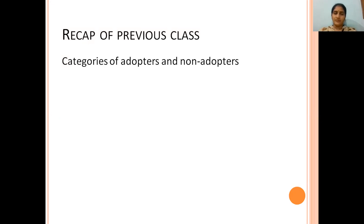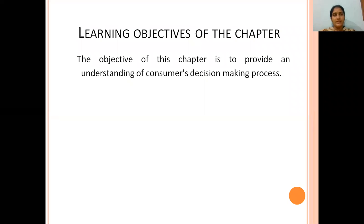Before starting today's topic, let us first recap what we discussed in our previous class. We had discussed the categories of adopters and non-adopters — what the different types of adopters are, who are called non-adopters, and how these categories came into picture. The learning objective of this chapter is to provide an understanding of the consumer decision making process.